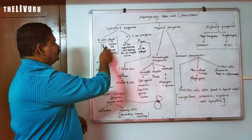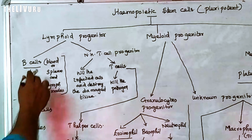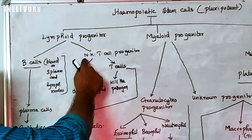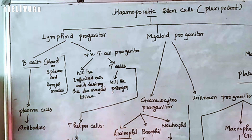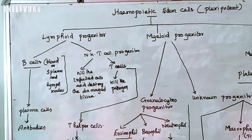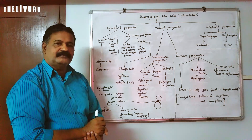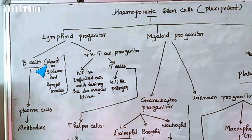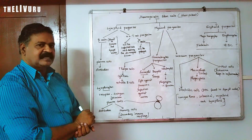The lymphoid progenitor gives rise to B cells and NK-T cells. NK cells are natural killer cells and T cells are also derived from this progenitor. B cells are a very important component of the immune system.